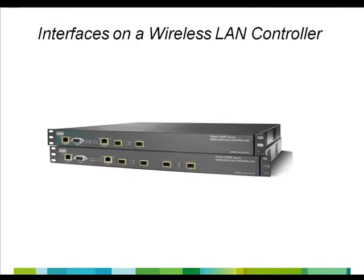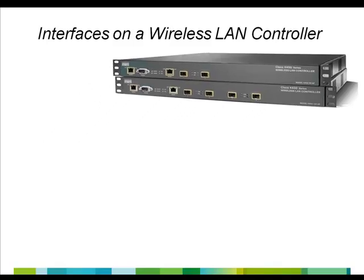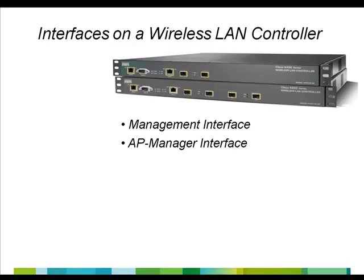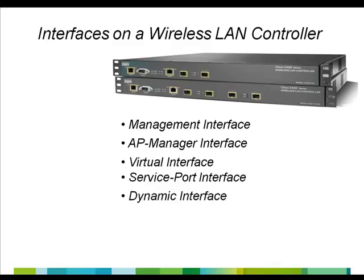On a wireless LAN controller, there are five different types of interfaces. Some of them are mandatory and are configured at startup using the configuration wizard, while others are optional. The different types of interfaces on the wireless LAN controller are: the Management Interface, the AP Manager Interface, Virtual Interface, Service Port Interface, and the Dynamic Interface.